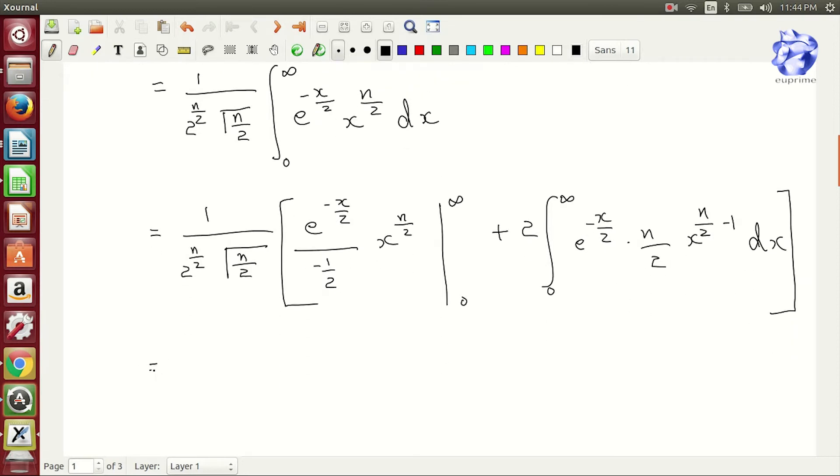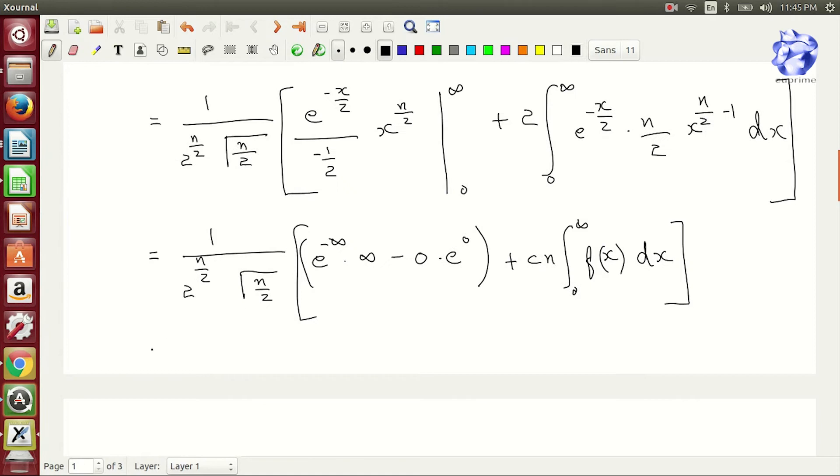This results in 1 by 2 to the power n by 2 into root n by 2 where we reduce e to the power minus infinity into infinity minus 0 to the power e to the power 0. So this equation goes on for a while until you get n into 1, which means that the mean is n.